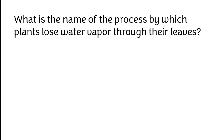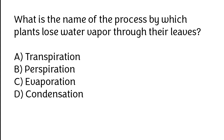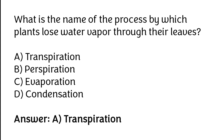What is the name of the process by which plants lose water vapor through their leaves? Transpiration, perspiration, evaporation, or condensation. The correct answer is option A. Transpiration is the process by which plants lose water vapor through their leaves.